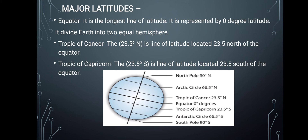Now let's discuss the important major latitude lines. The diagram shows the earth's major latitude lines with their degrees and names. The first important line is the equator, which is the most significant latitude line found on the middle part of the earth. It is denoted by zero degrees and divides the earth into two equal hemispheres.